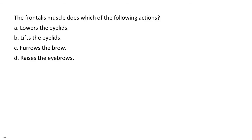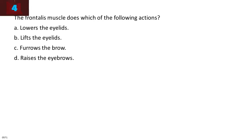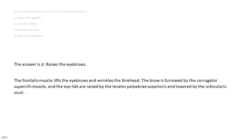The frontalis muscle does which of the following actions? A. Lowers the eyelids. B. Lifts the eyelids. C. Furrows the brow. D. Raises the eyebrows. The answer is D. The frontalis muscle lifts the eyebrows and wrinkles the forehead. The brow is furrowed by the corrugator supercilii muscle, and the eyelids are raised by the levator palpebrae superioris and lowered by the orbicularis oculi.